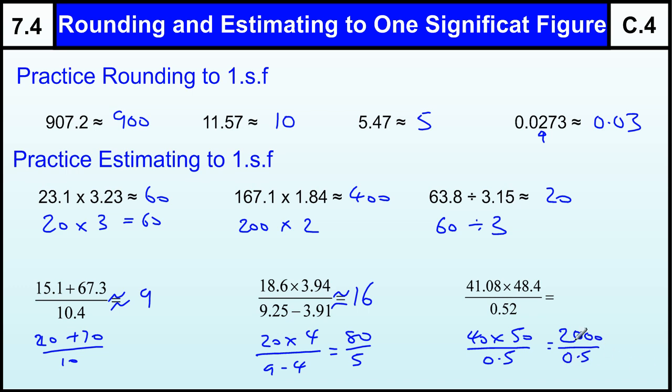Again, we can do two thousand divided by five, then times the answer by ten. Or we can realize because it's divided by 0.5, we're just going to double it, because 0.5 goes into everything twice as much as one does. So the answer is going to be four thousand approximately. There we go.